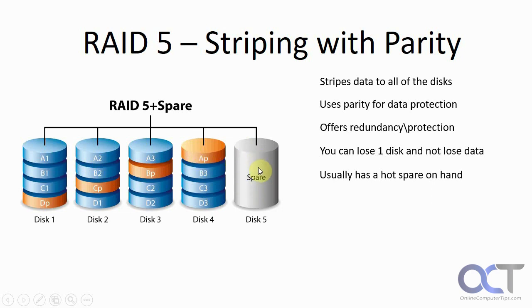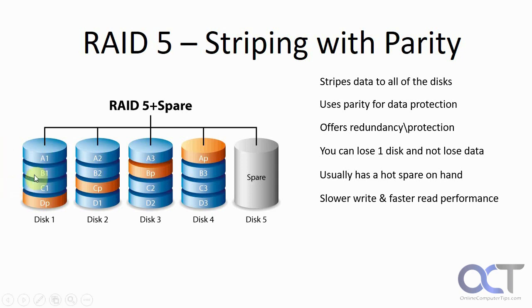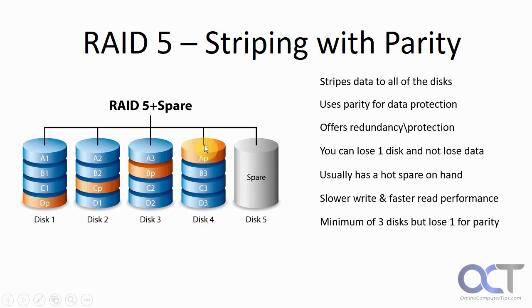That's what a hot spare is for — in most cases the hot spare is set to take over if you lose a disk and then perform the rebuild, which could actually take a long time. RAID 5 does have slower write performance because when you write something it has to write to every disk and calculate parity. But it does have fast read performance because you get to read off every disk. You need a minimum of three disks for RAID 5, but you will lose one disk worth of data capacity.